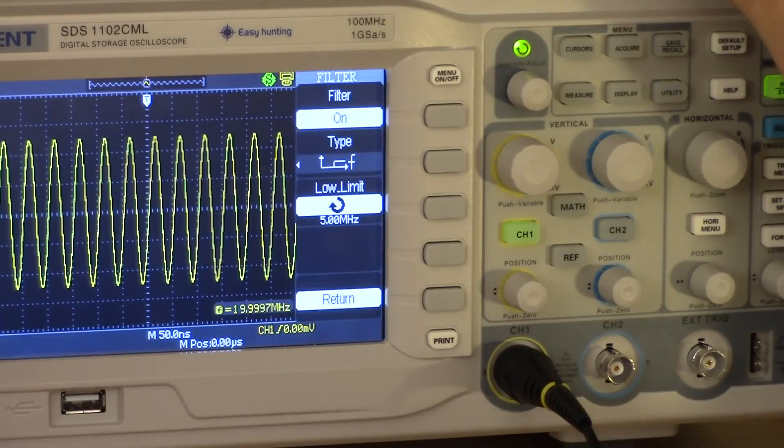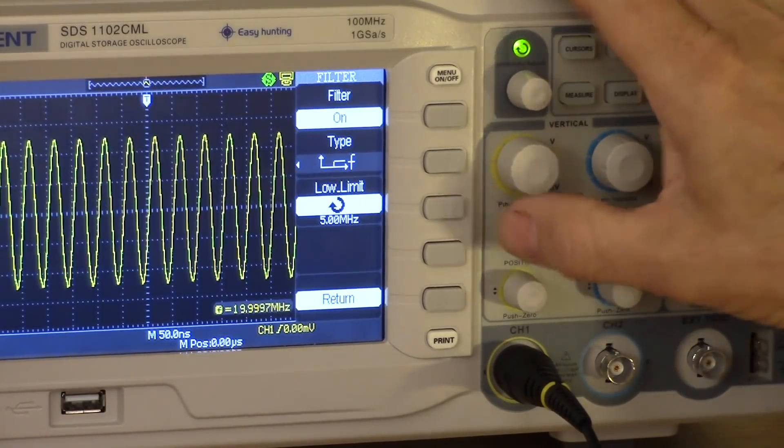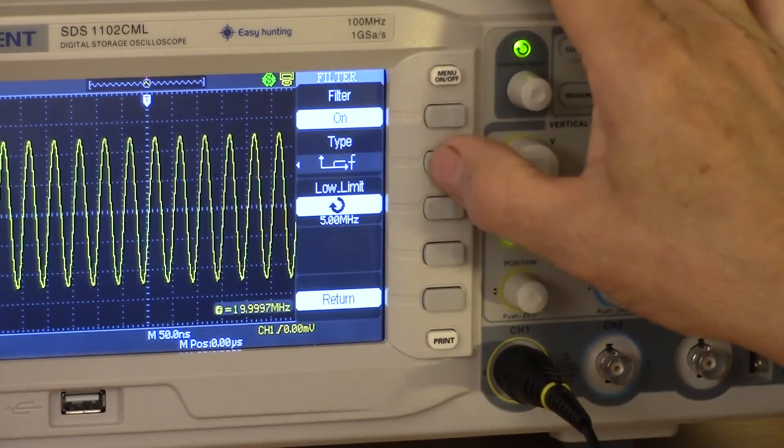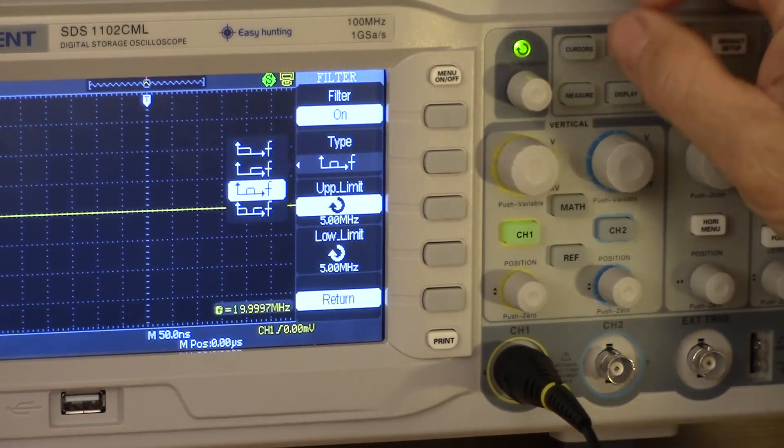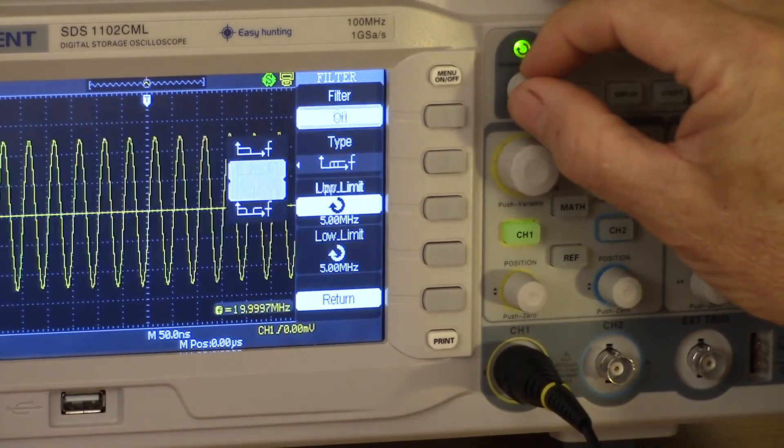One of the really nice features about the scope is that it includes filters on each of the vertical channels. If I turn the filters on, I can select one of four types: low pass, high pass, or band pass. In this case, I'll select here.